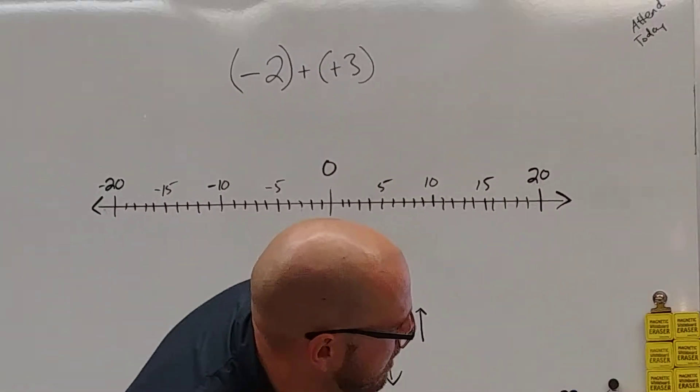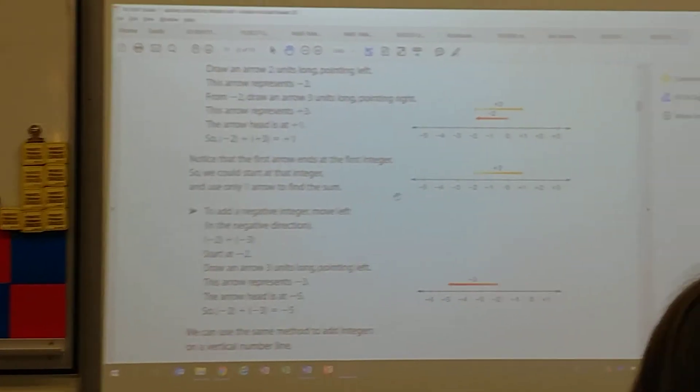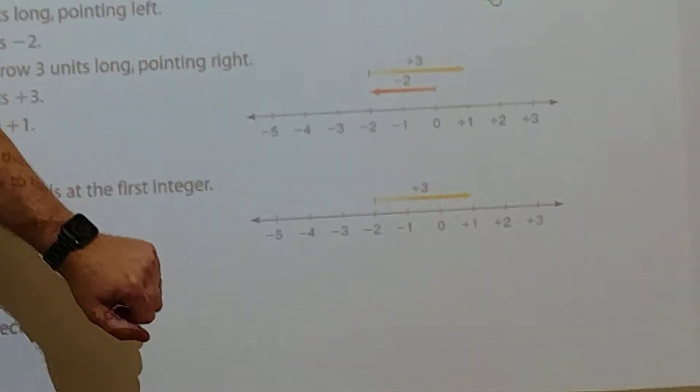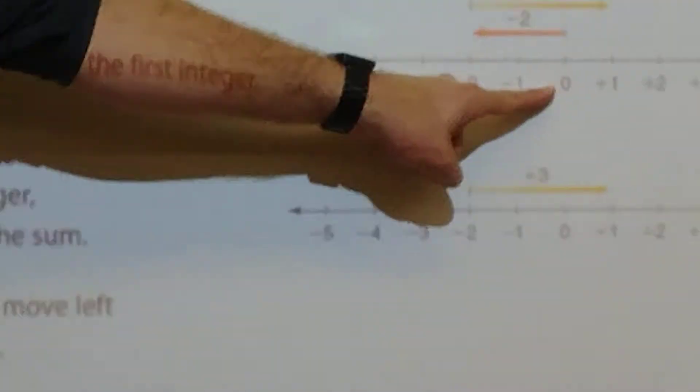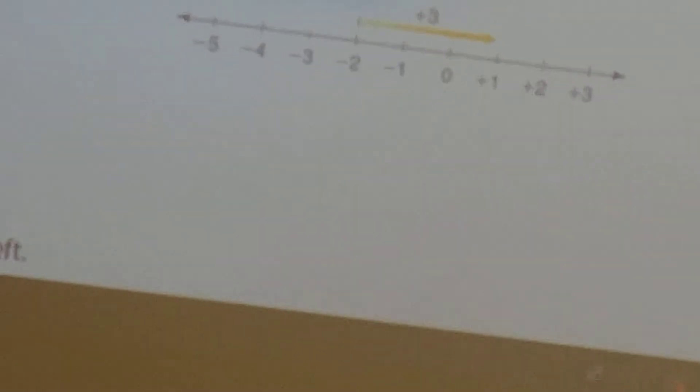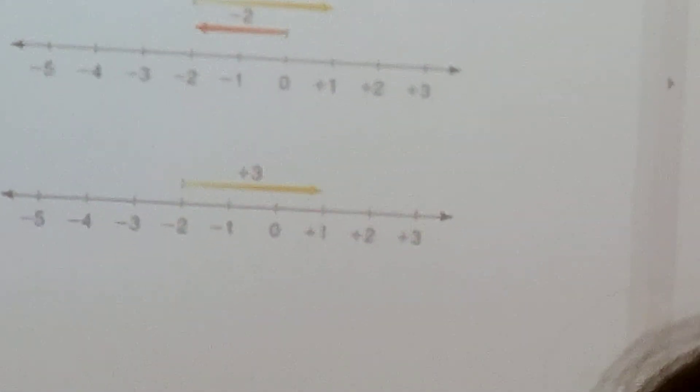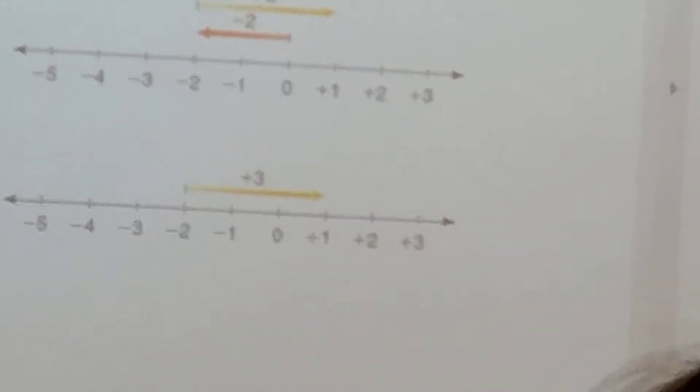All right, so let's move on to the next example. Let's take a look at the textbook. Mr. Camera Guy, can you zoom right in on their example right here? You'll see that it matches very closely to what we had. In the first example, they said start at 0, minus 2, plus positive 3. And then this kid did it a different way. He started at negative 2 and just added positive 3. That's the same question that we just did.